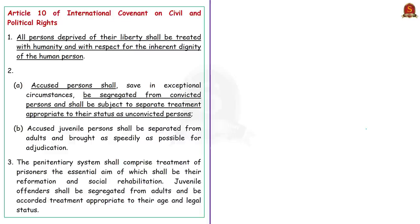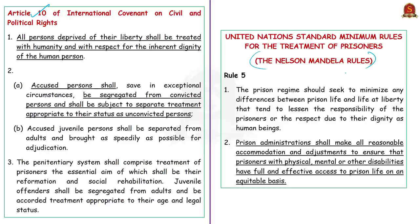These obligations under the CRPD are complemented by Article 10 of the International Covenant on Civil and Political Rights and by the Nelson Mandela Rules. You should know that the Nelson Mandela Rules refer to the revised Standard Minimum Rules for the Treatment of Prisoners. It was initially adopted by the first UN Congress on the Prevention of Crime and the Treatment of Offenders in 1955.